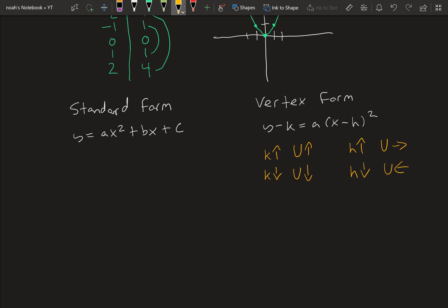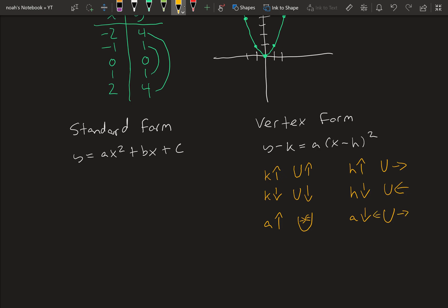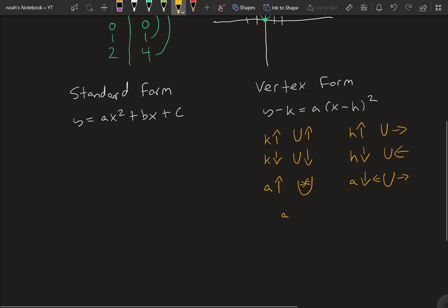And a is the scaling factor. So if we increase a, this makes the parabola skinnier. Decreasing a makes it more wide. And lastly, if a is positive, it's the standard parabola opening upwards. If a is negative, it opens downwards, like that.